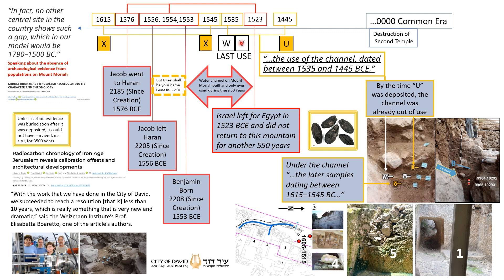The important dates relative to the discoveries here: sample X, at the level below the plaster channel, shows a date range of 1615 BCE through 1545 BCE. Looking at the date range quite a bit above the channel, samples U relate to 1445 BCE. Samples W and V, which are immediately above the channel, are in the range of 1535 BCE.